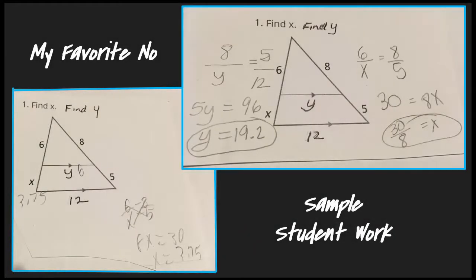An example of how the My Favorite No strategy could be used with standard G-SRT-4. Students could be given this diagram or one similar in which they are asked to find the values of X and Y. Student work would then be used to highlight common misconceptions. What common misconceptions are occurring in these student work samples? Share and discuss with your colleagues the common misconceptions held by these students.